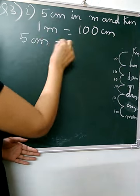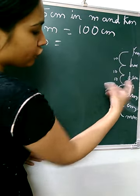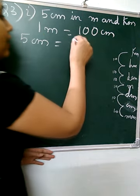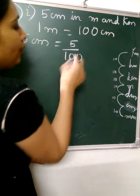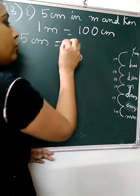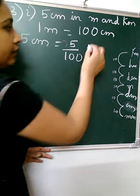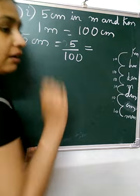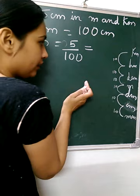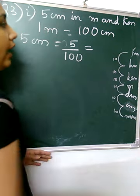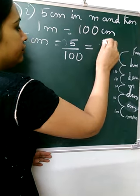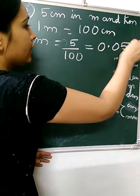We have to convert 5 centimeters. Here, small is getting converted into big, so whenever small gets converted into big, we divide — just as we did with rupees and paise. So 5 will be divided by 100. We need 2 decimal places, but we have only one digit, so we put a zero in the beginning. When it is a whole number, we can put any number of zeros in the beginning. When converting to decimal, we can put zeros at the end. So this becomes 0.05 meters.